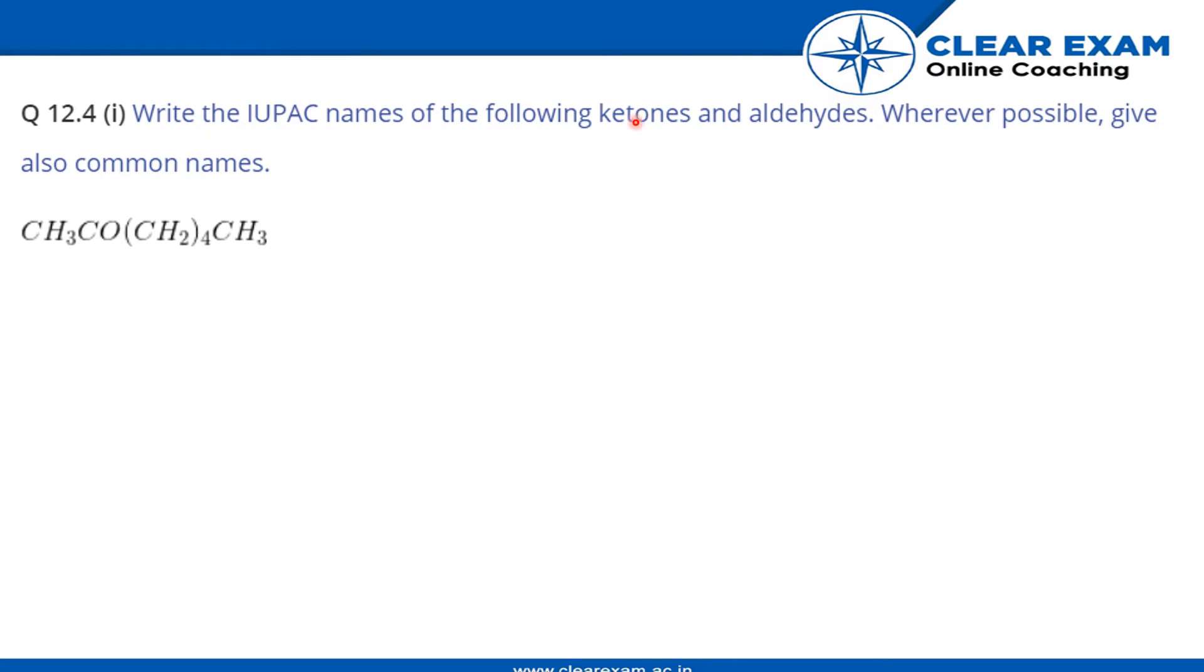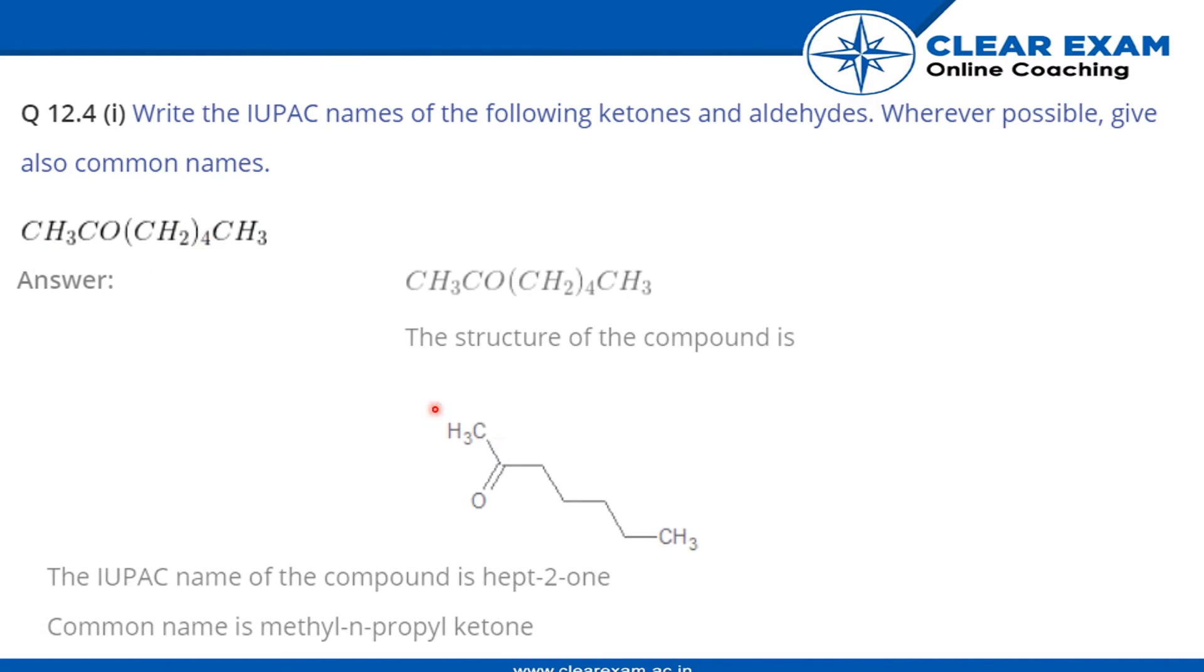The question is: write the IUPAC names of the following ketones and aldehydes. Wherever possible, give also common names. This is the first compound given to us. From the figure, you can easily see that it is a simple ketone with a seven carbon chain. So, hept-2-one, because at the second carbon we have this ketone group.